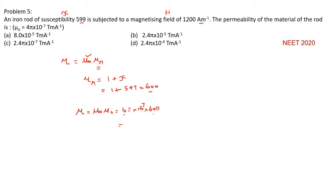4 into 600, 2400. This pi you write into 10 to the power of minus 7. So 2.4 pi into 10 to the power of minus 7.